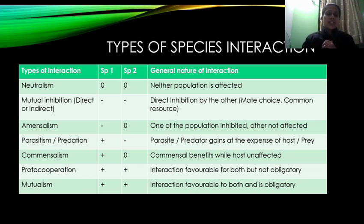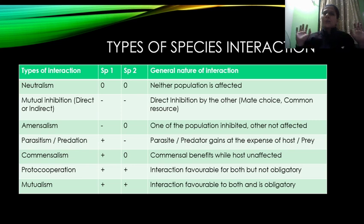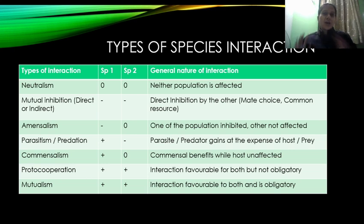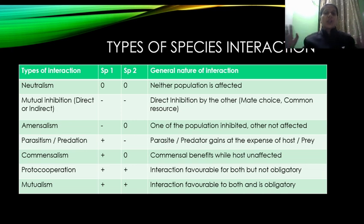पहला interaction जिसे कहते हैं neutralism। Neutralism मतलब — एक species और दूसरे species में जो interaction होता है उससे ना किसी को कोई चोट पहुँचती है, ना किसी को कोई फायदा होता है। So it is a no win, no loss situation — neither population is getting affected.